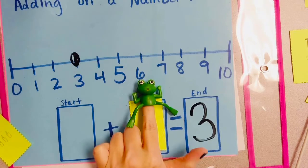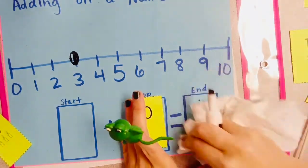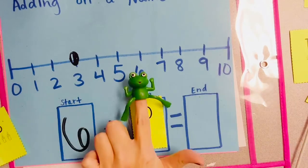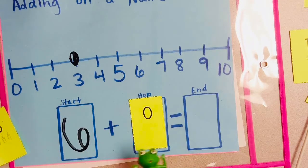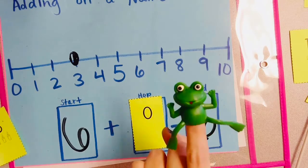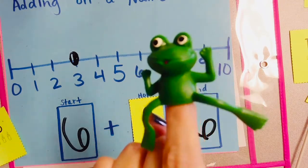So if he was on 6, what would the ending number be? Did you say 6? If so, you are right. Air high five with frog.